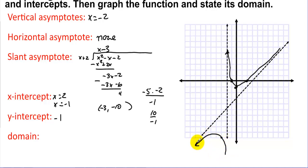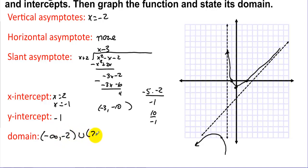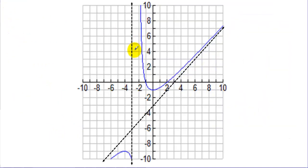The graph on the left follows the slant asymptote and curves around the vertical asymptote. The domain is (-∞, -2) ∪ (-2, ∞). A graphing calculator confirms this shape.